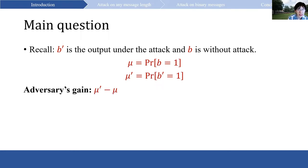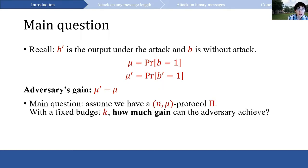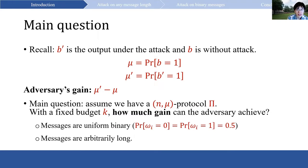We define an adversary's gain to be mu prime minus mu — that is, how much the adversary increases the probability that the output becomes 1. We can now ask: assuming we have an n-party protocol pi where the number of parties is n and the original probability of b equals 1 is mu, then with a fixed budget k, how much gain can the adversary achieve? We consider two cases. In the first case, the message is uniform binary: each omega_i equals 0 or 1 with probability 50% each. In the second case, the message is arbitrarily long. The first is a special case of the second; these two cases are connected but also very different.